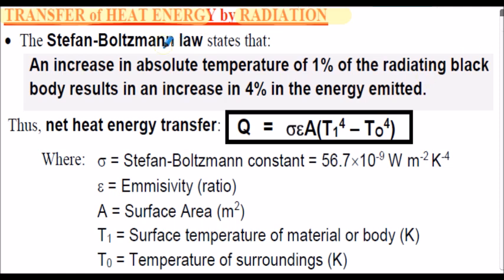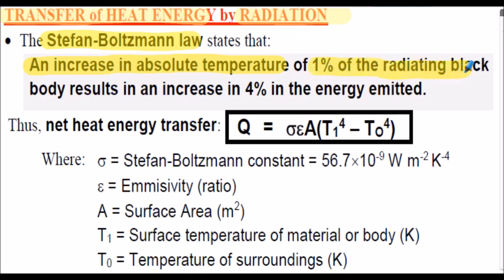We commence by stating the Stefan-Boltzmann law: an increase in absolute temperature — that's in Kelvin — of 1% of the radiating black body results in an increase of 4% in the energy emitted.